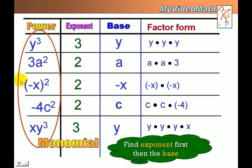All these expressions with variables, we also call them monomials. A monomial is not necessarily only with variables — it could be a constant, just like what we've seen before. But all of these we call monomials. We're going to talk about monomials a lot in algebra.